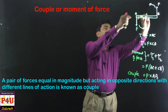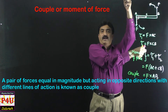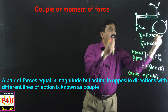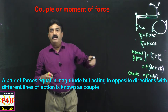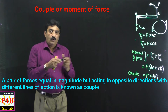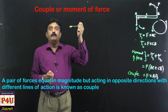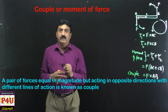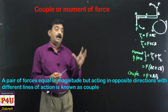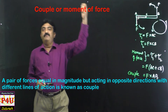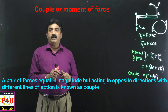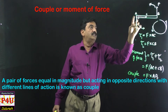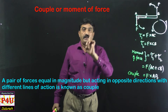A couple is the net rotational effect produced by two equal and opposite forces. Examples include a car steering wheel, a spanner, and a T-square — all involve two forces producing rotation. The total torque tau 1 plus tau 2 equals F·AC plus F·CB, which is F·(AC + CB), giving F·AB. This moment of force is the couple.